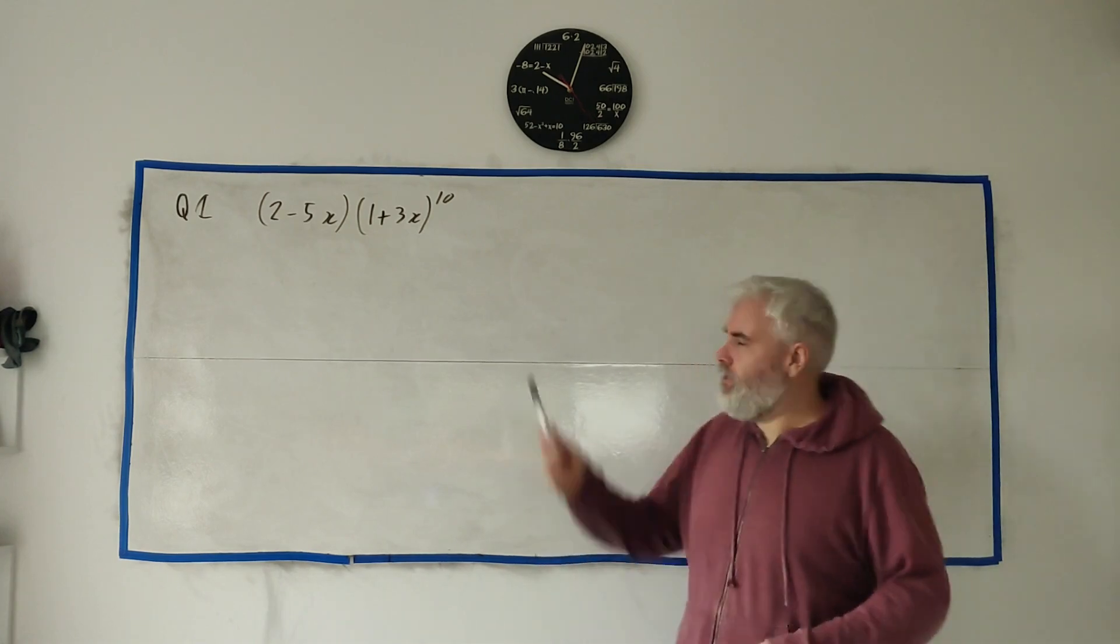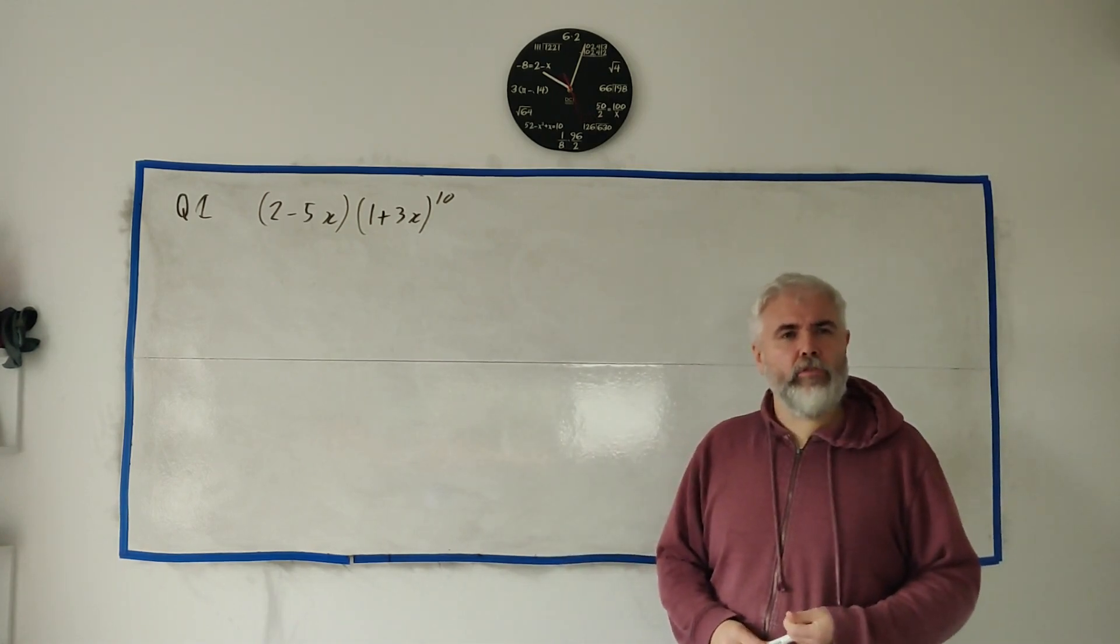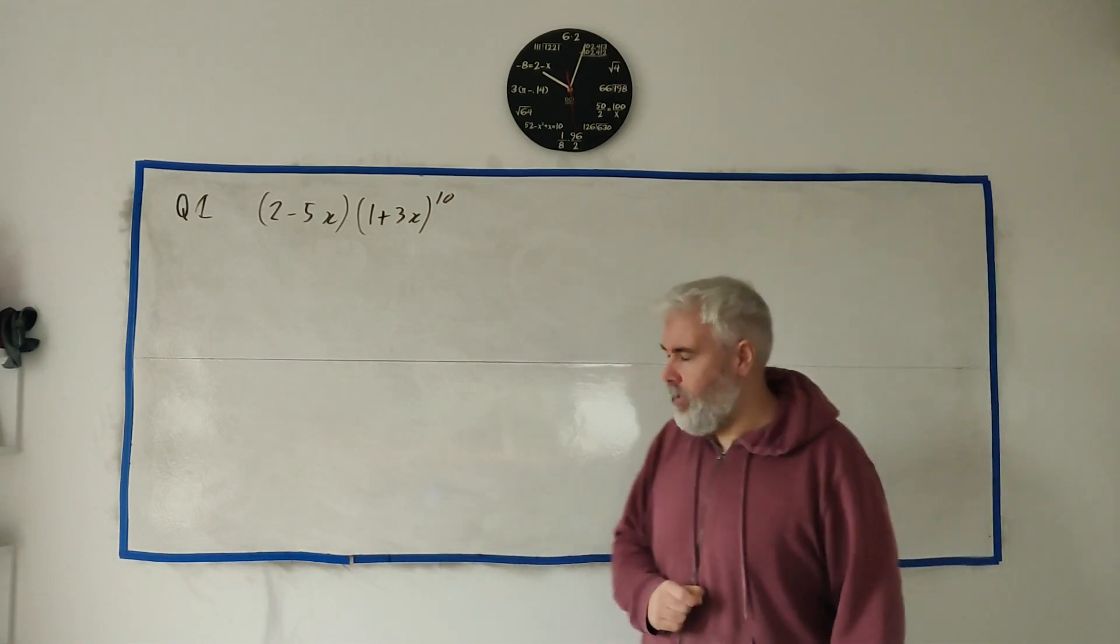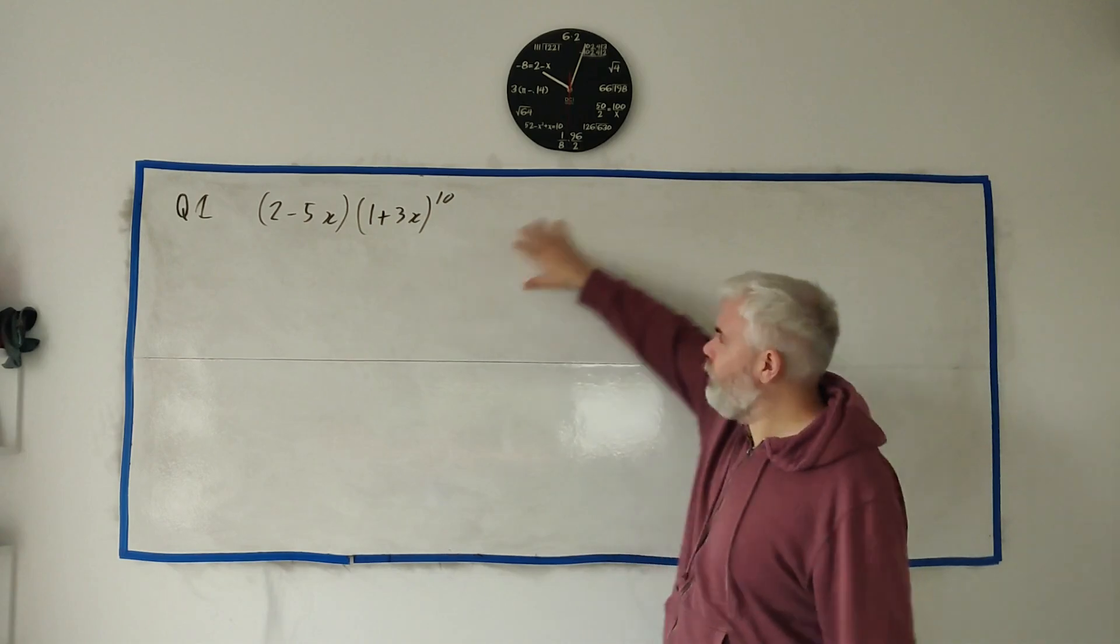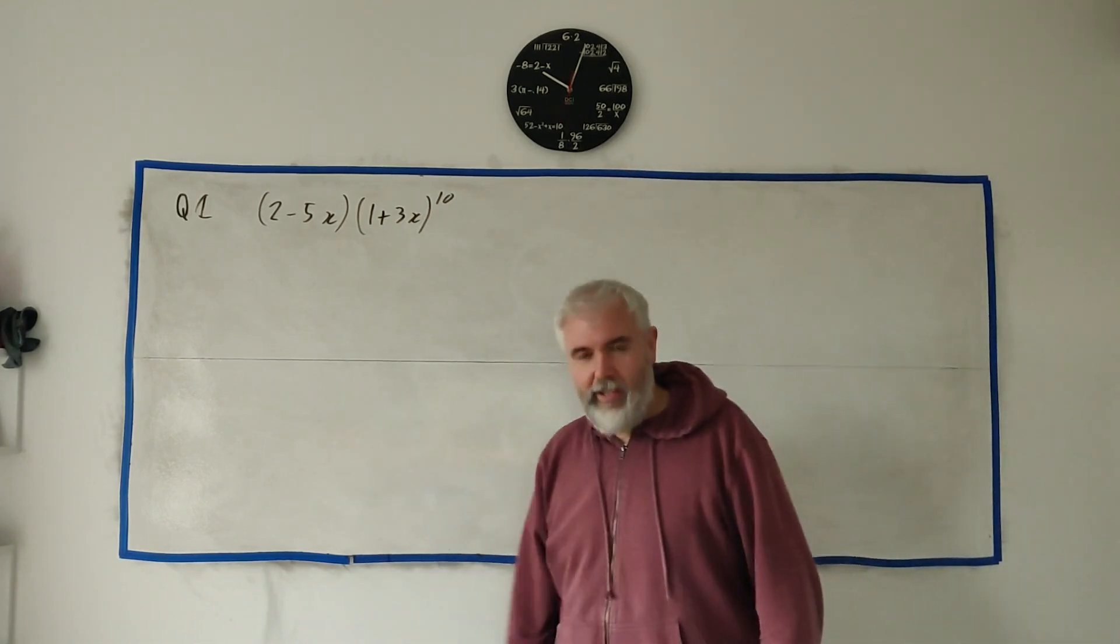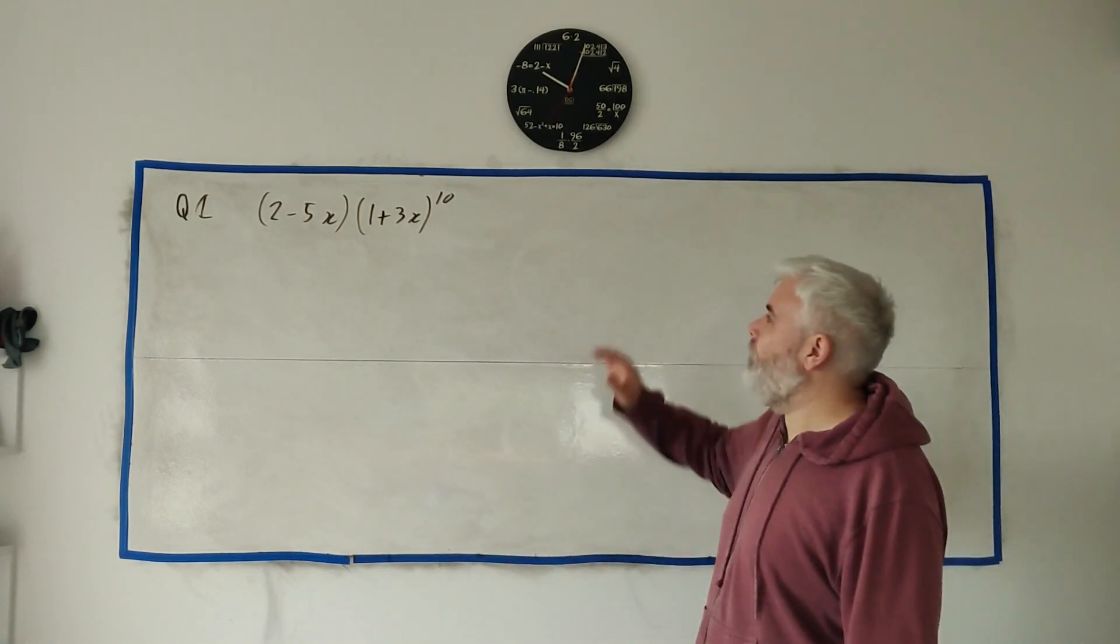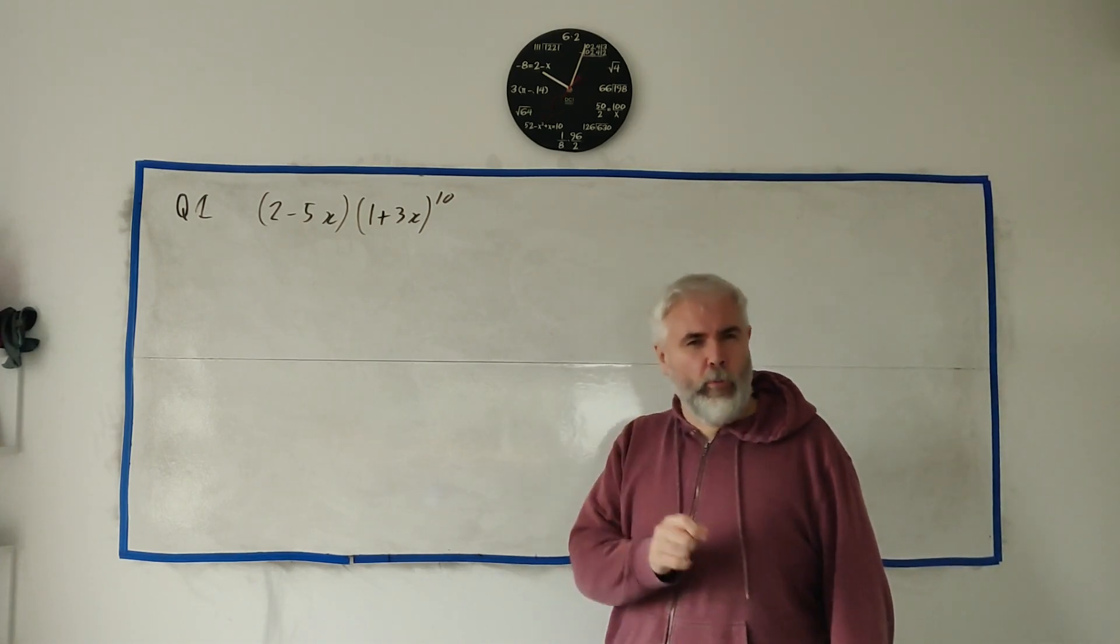In question 1, we're given this expression here and we're asked to find the coefficient of the x squared part. So don't worry, we don't have to multiply out this entire term. It could take half an hour or so. We're going to use the binomial expansion.